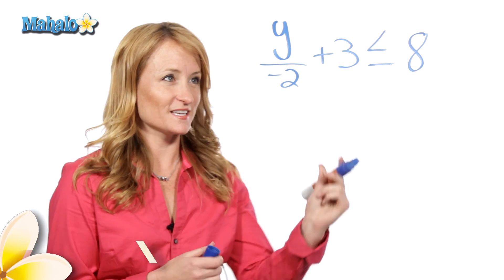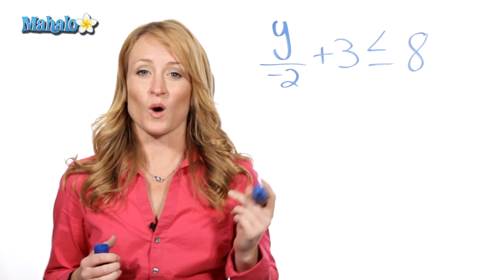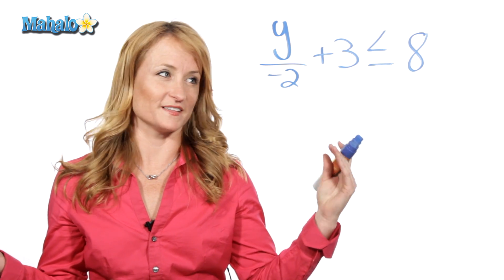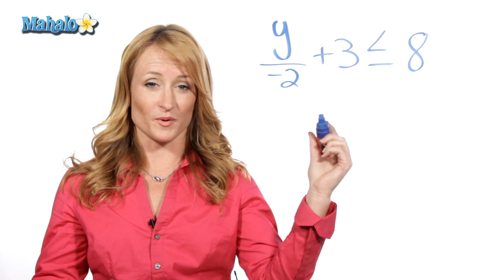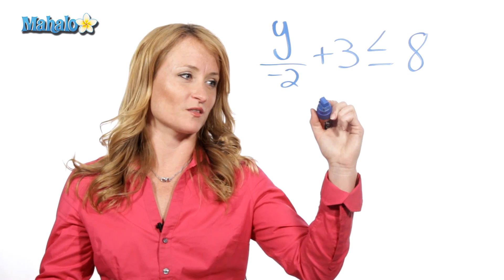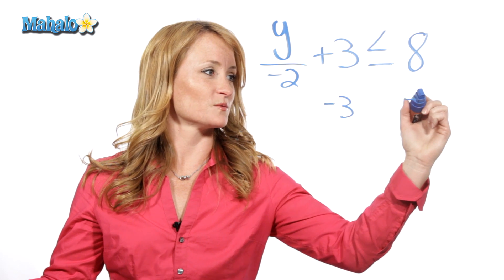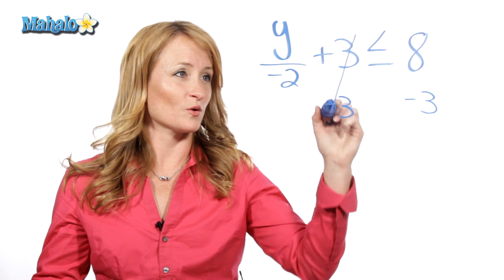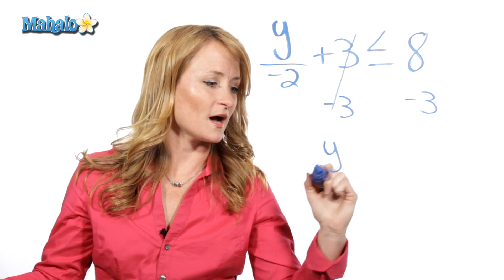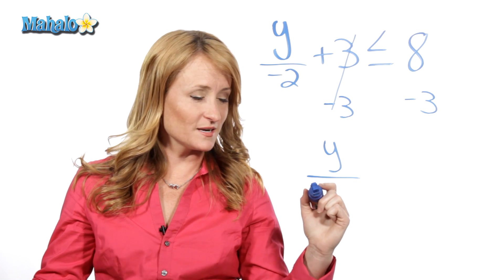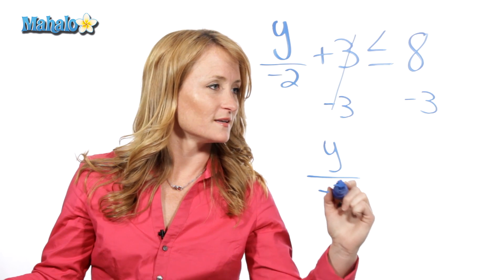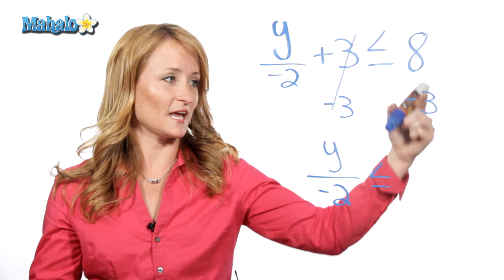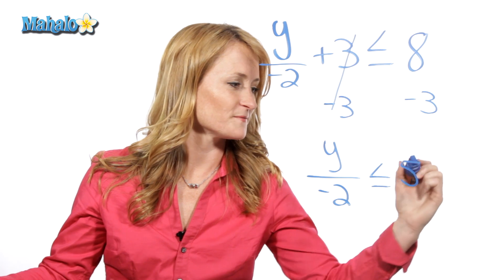So let's start with the basics. In order to get y by itself, we have to get rid of everything that's on this side. We're going to start by subtracting 3 from both sides. So subtracting 3 from both sides, we're left with y divided by negative 2 is less than or equal to 8 minus 3, which is 5.